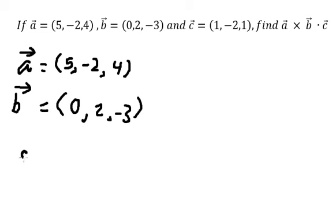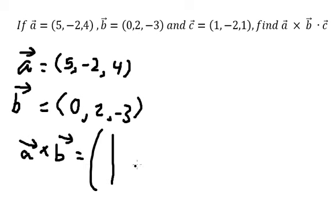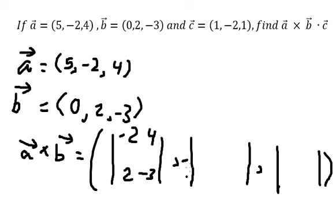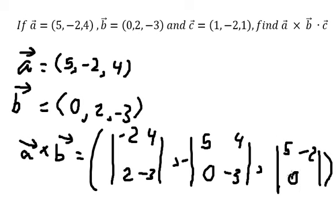So this one should be like this. We have the matrix in here, and this one we have the negative in here. So we have negative 2, 4, 2, negative 3, 5, 4, 0, negative 3, 5, negative 2, 0, and 2.